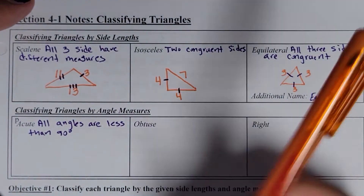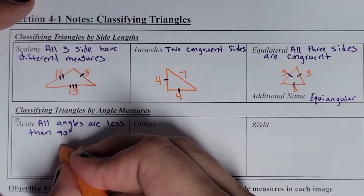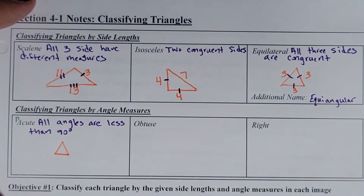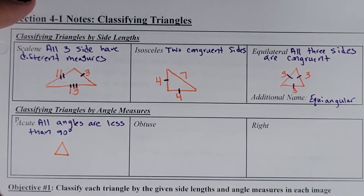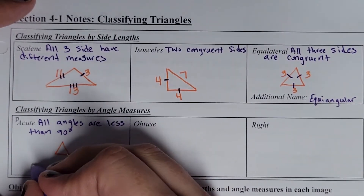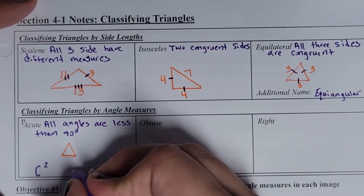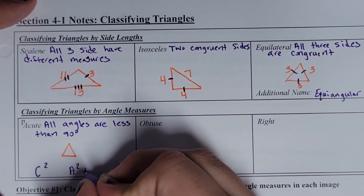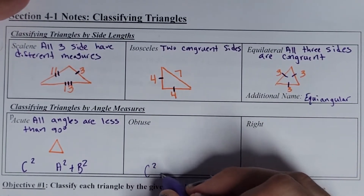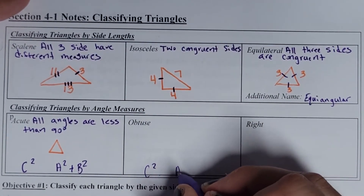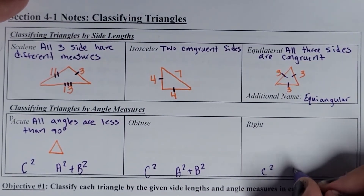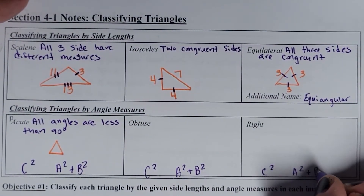An acute triangle will usually look like a small-looking triangle where all the angles are smaller than 90 — they're little tiny angles. We're also going to note something down here, so make sure you leave some space. We'll write: C squared blank, A squared plus B squared. Over here the same thing: C squared blank, A squared plus B squared. And again: C squared blank, A squared plus B squared. We'll come back to that in just a second.